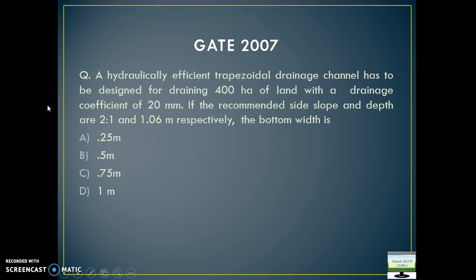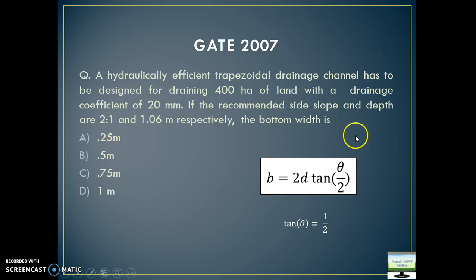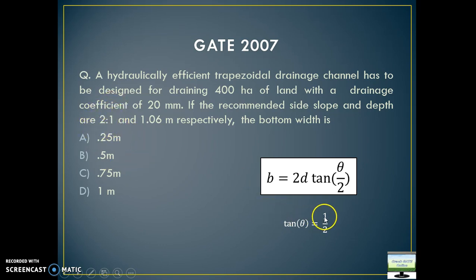This is a 2007 question. Please pause the video and read the question first. It has asked what will be the bottom width B, and it is a most efficient channel — meaning a hydrologically efficient channel. They have given the side slope. You need to first calculate the general equation for most efficient channel, which is B equal to 2D tan(theta/2). How will you get the value of theta? They have given the side slope as horizontal to vertical. But tan(theta) equals vertical to horizontal, so you reverse it — that is 1 by 2. From here you calculate theta, that is tan inverse of 1 by 2, and put that value into the equation.